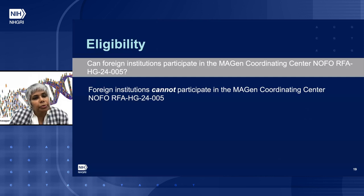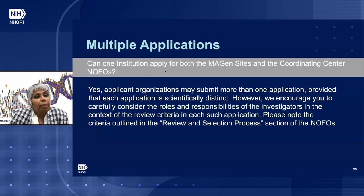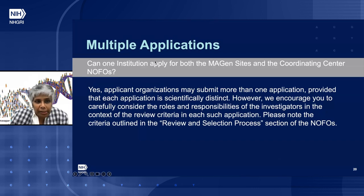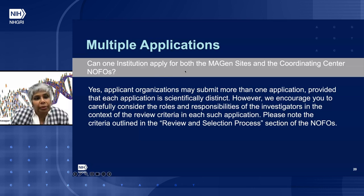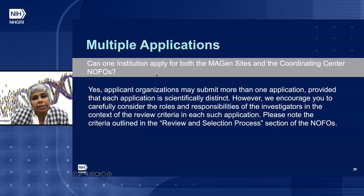Q&A: Can foreign institutions participate in the IMAGINE Coordinating Center? No, they cannot. Can one institution apply for both the IMAGINE sites and coordinating center NOFOs? Yes, applicant organizations may submit more than one application provided each application is scientifically distinct. However, we encourage you to carefully consider the roles and responsibilities of investigators in the context of the review criteria for each such application, as stated in the review and selection process section of the NOFOs.